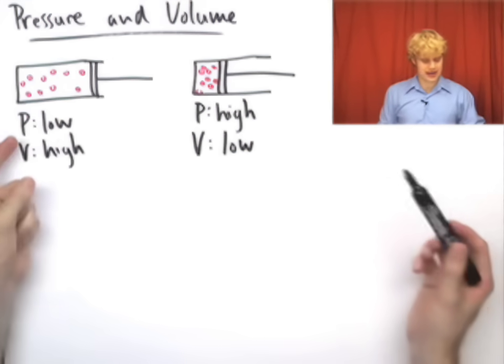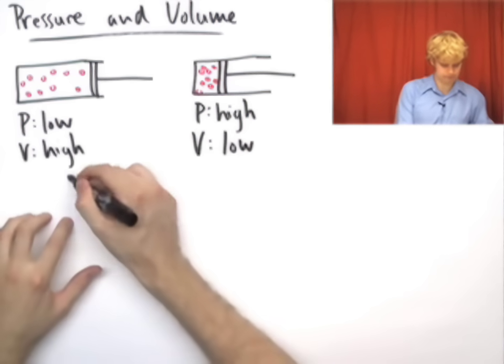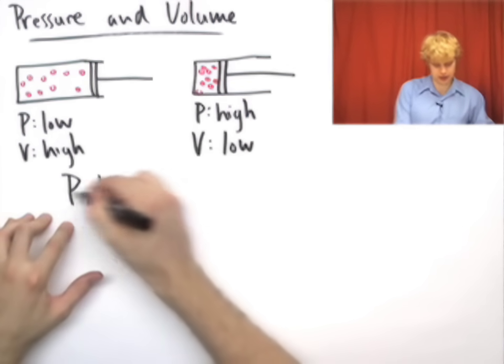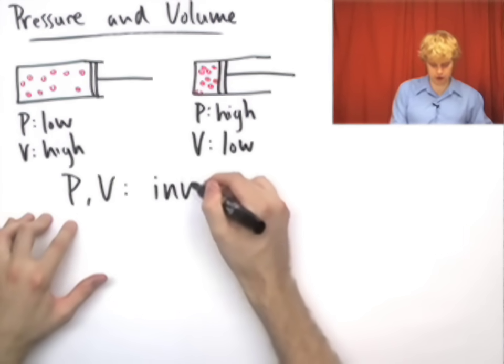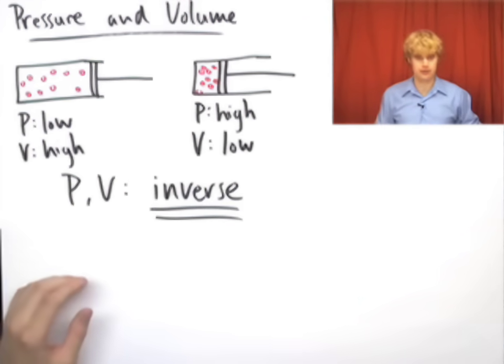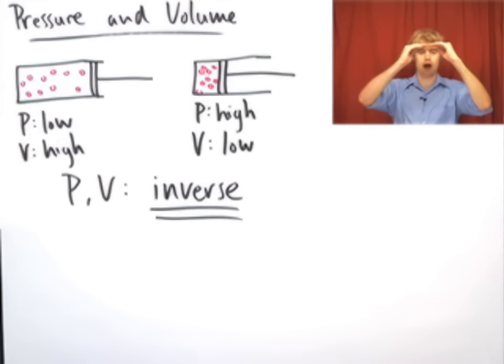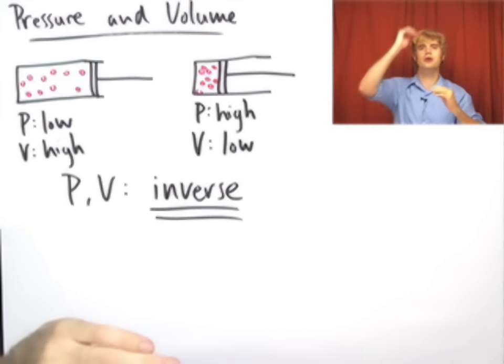So as pressure goes up from low to high, volume goes down. What this means is that the relationship between pressure and volume is an inverse relationship. As pressure goes up, volume goes down. They move in different directions. On the other hand, if pressure were to go down, the volume would be able to go up.